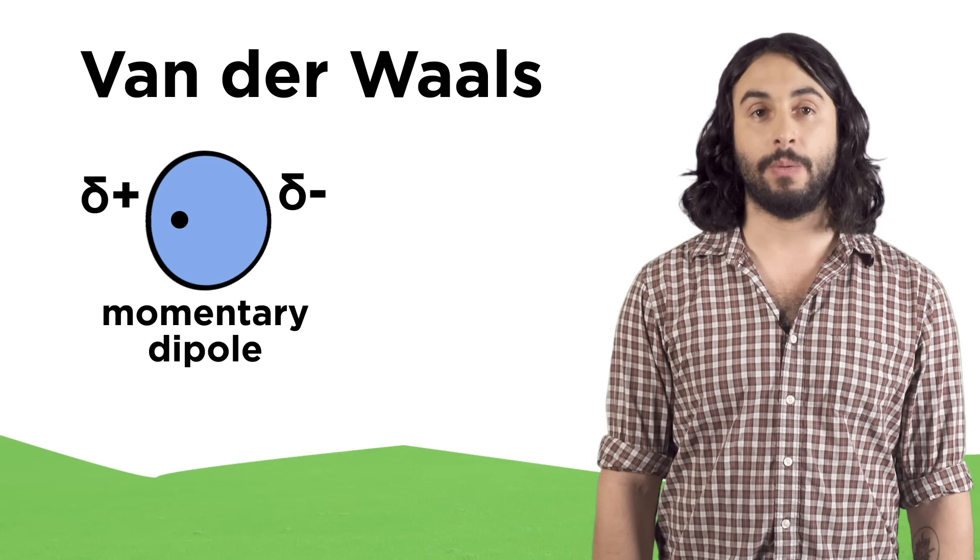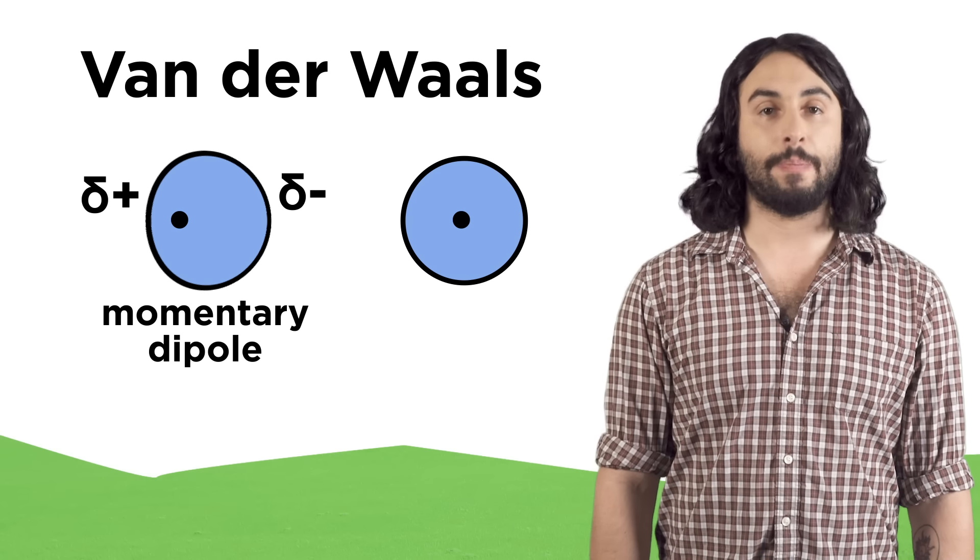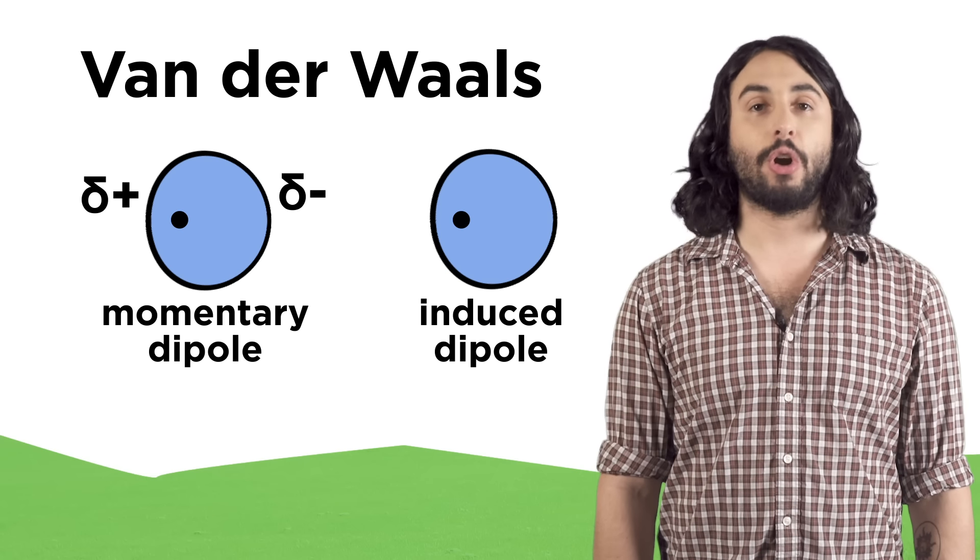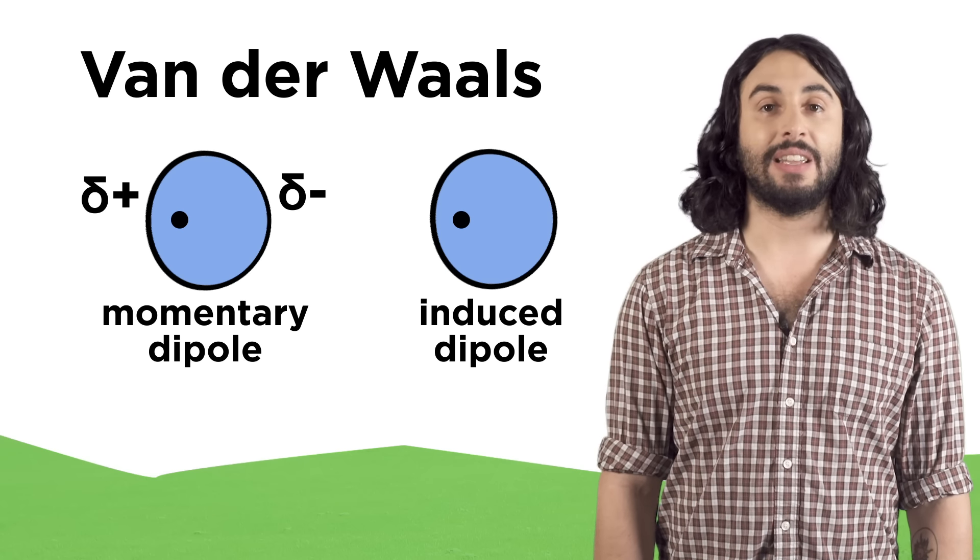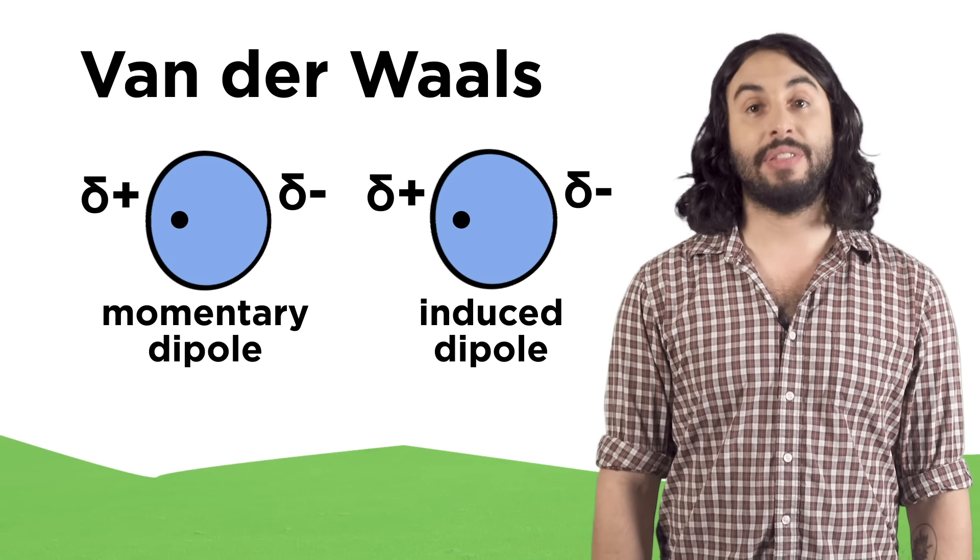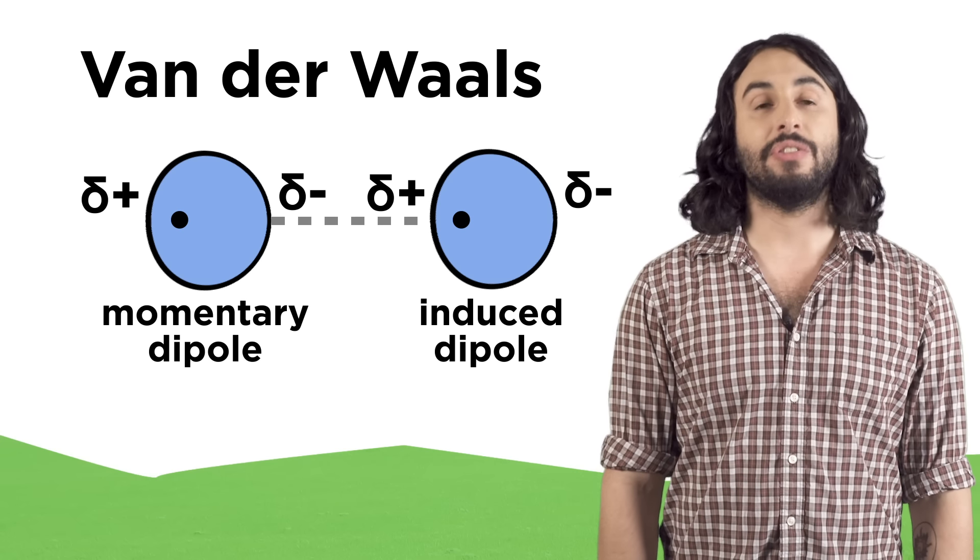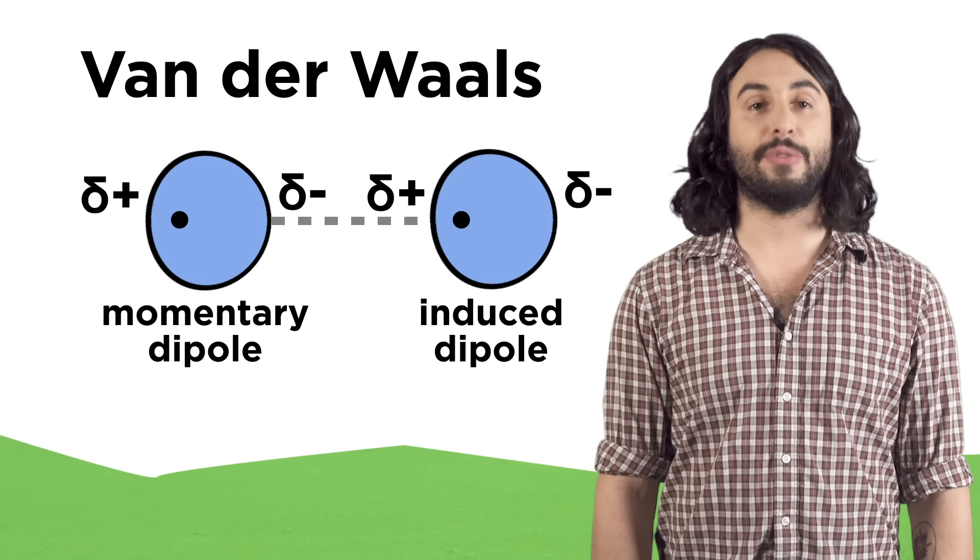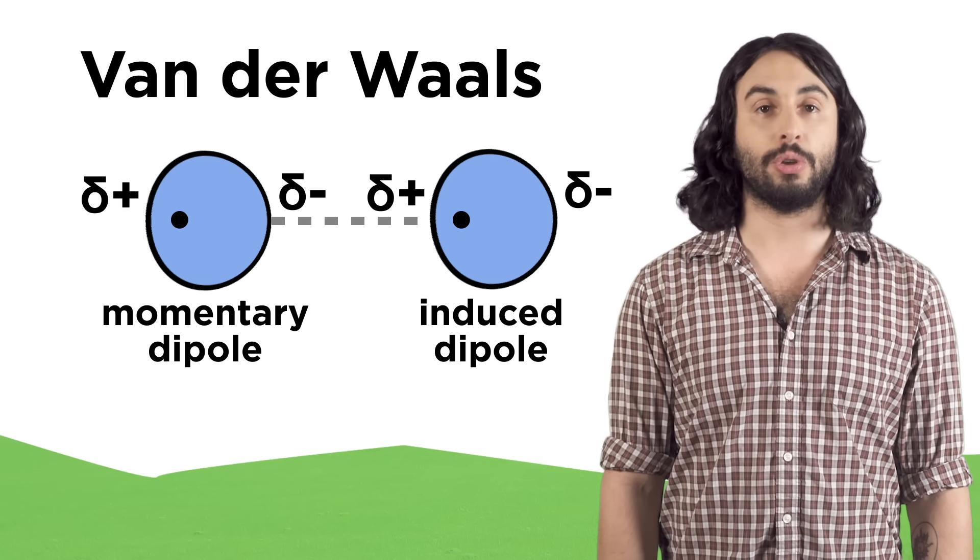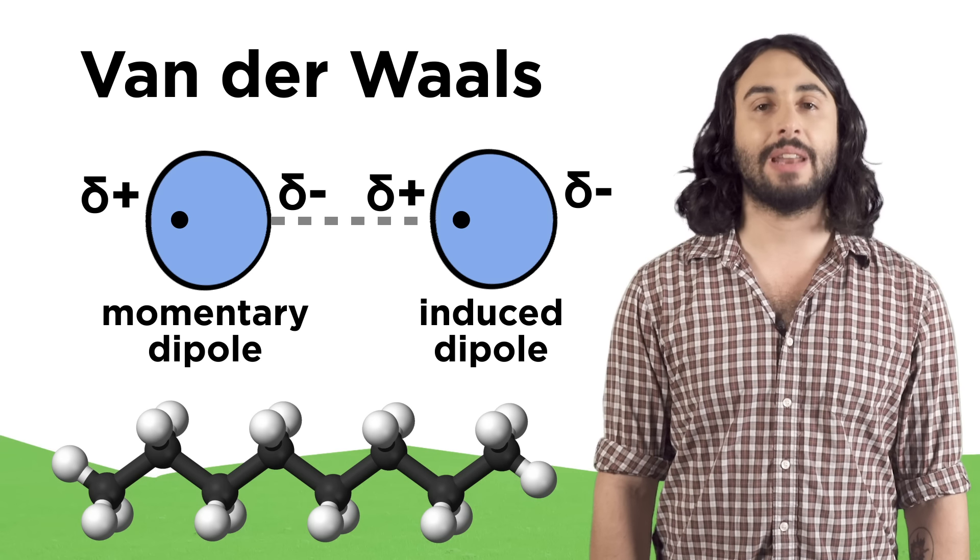This is much weaker than a formal dipole, but it still exists and can be measured. If a momentary dipole approaches another atom, it can generate an induced dipole, meaning the slight partial negativity repels this electron density over to the other side of the atom, so it will also have a slight dipole. And then there can be a momentary dipole-induced dipole interaction. That is the van der Waals force. This is a weak and fleeting attraction, but this is all that monoatomic species and nonpolar covalent compounds can do, and for very large molecules like some hydrocarbons, the force can become significant.